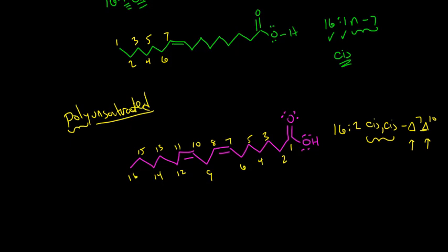We can also name this using our biological convention, starting from the omega-terminus. Counting from the omega end, the first double bond is on the sixth carbon, so we name this 16:2 n-6 — and that's all the information we need for the biological convention. In biological systems, all double bonds are cis, so we know both are cis. Also, when we have multiple double bonds, they always skip a carbon — so if there's a double bond on carbon 6, the next is on carbon 9, always three carbons apart.